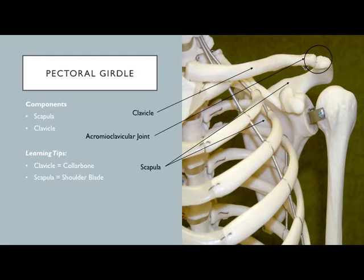We're going to start with the pectoral girdle — we have four general sections to cover today. The pectoral girdle consists of the scapula (shoulder blade) and the clavicle (collarbone).